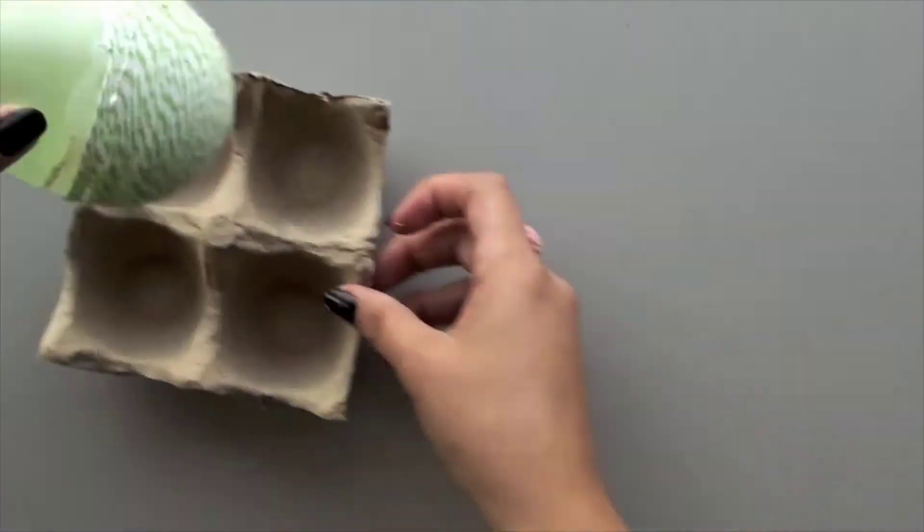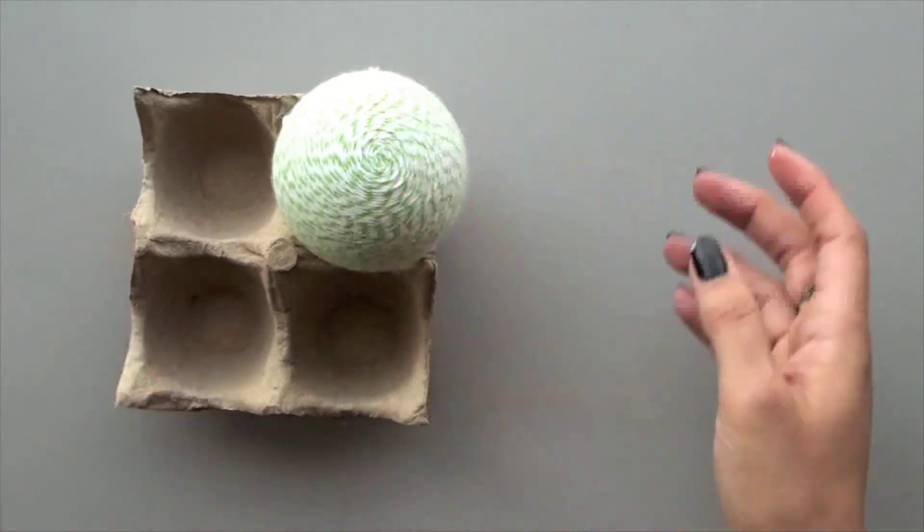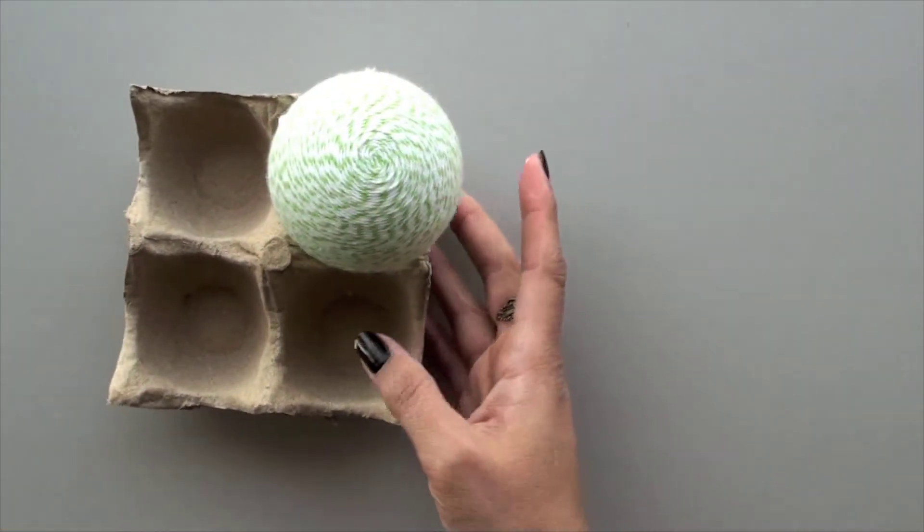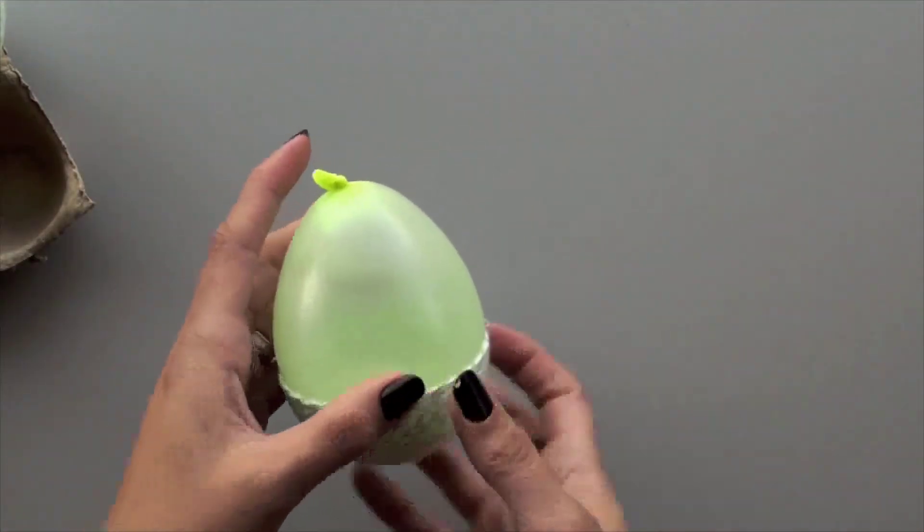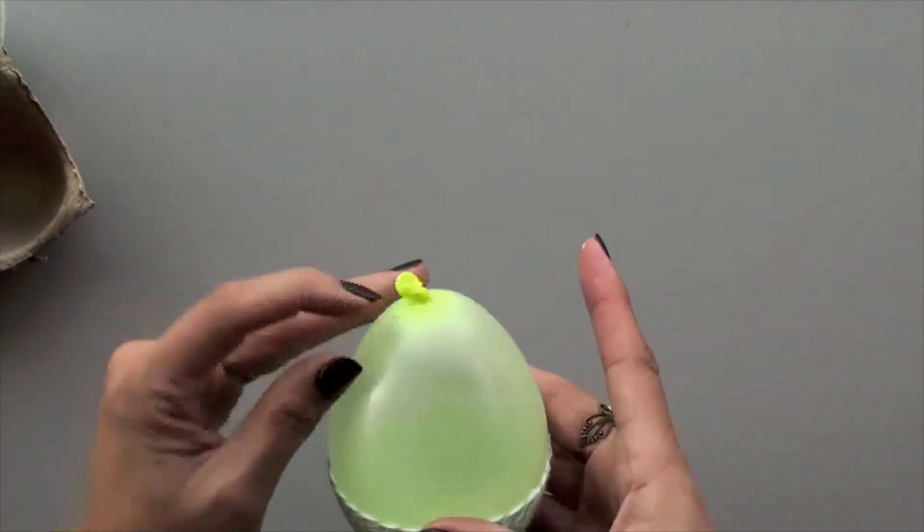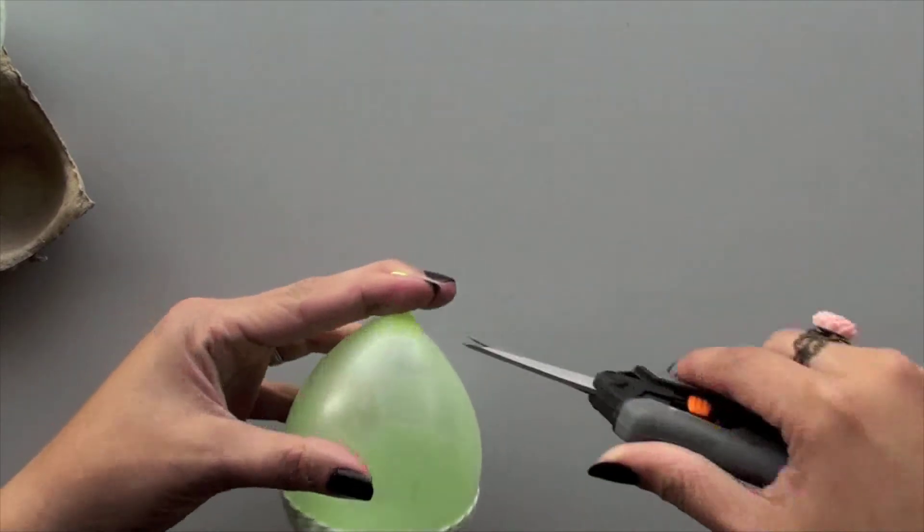You can either leave it overnight, as I'm doing here, or you could give it just enough time for it to dry like from this morning. This was from this morning and now I'm able to cut it. Either way, this is the process you'll do to get the balloon out. You'll just cut a little bit of the top and it'll kind of collapse on its own like this.